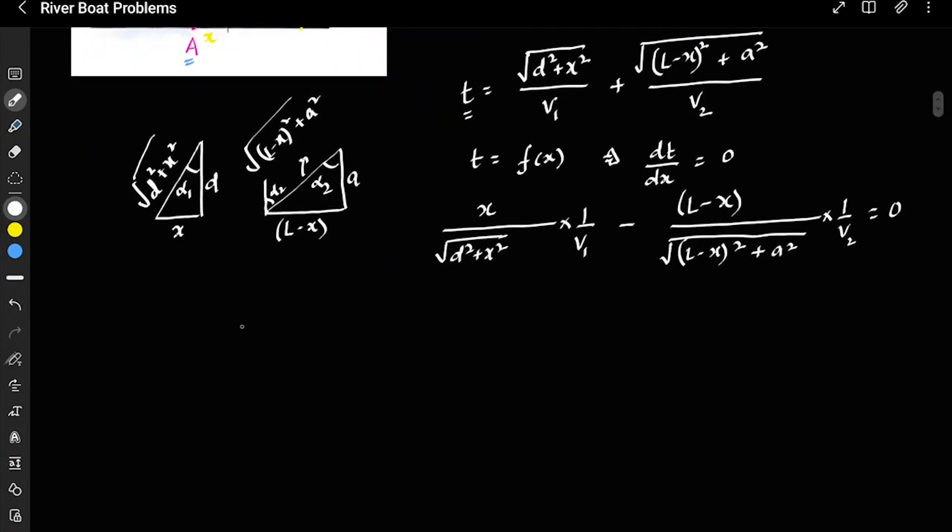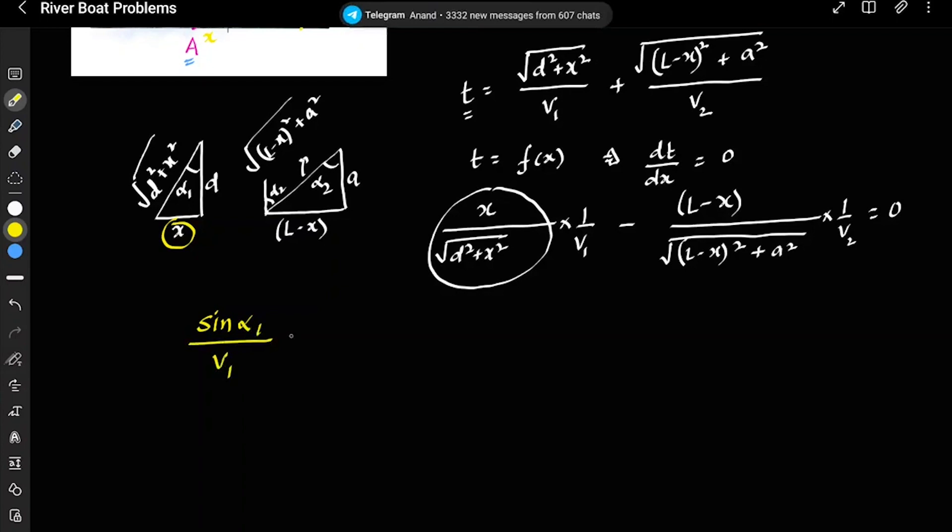Clearly if you look at this, I can say that this whole thing, so clearly x upon under root of D square plus x square in this triangle is sin alpha 1. So I will say sin of alpha 1 upon V1 is equal to, again here L minus x upon this is equal to sin alpha 2. So I can say this is sin alpha 2 upon V2.